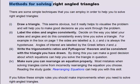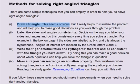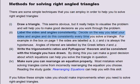Methods for solving right-angled triangles. There are some simple techniques that you can employ in order to help you solve right-angled triangles. 1. Draw a triangle. This seems obvious, but it really helps to visualise the problem and will help you make good decisions as you work through the problem. 2. Label the sides and angles consistently. Decide on the way you label your sides and angles and do this consistently every time you solve a triangle.